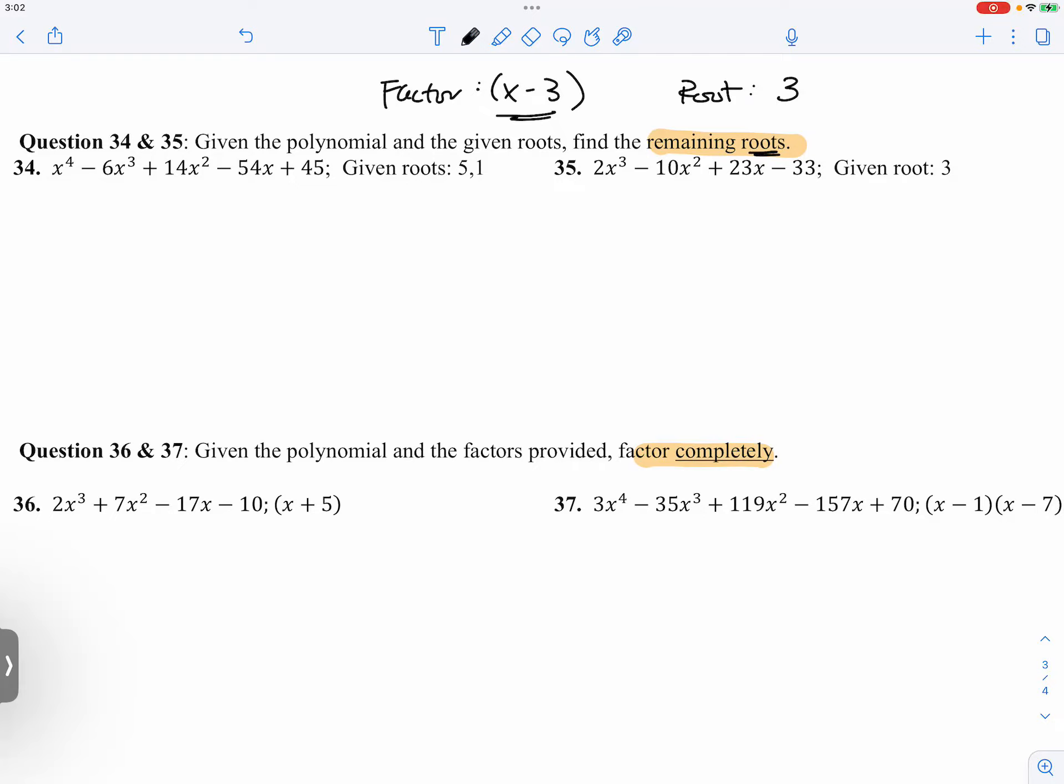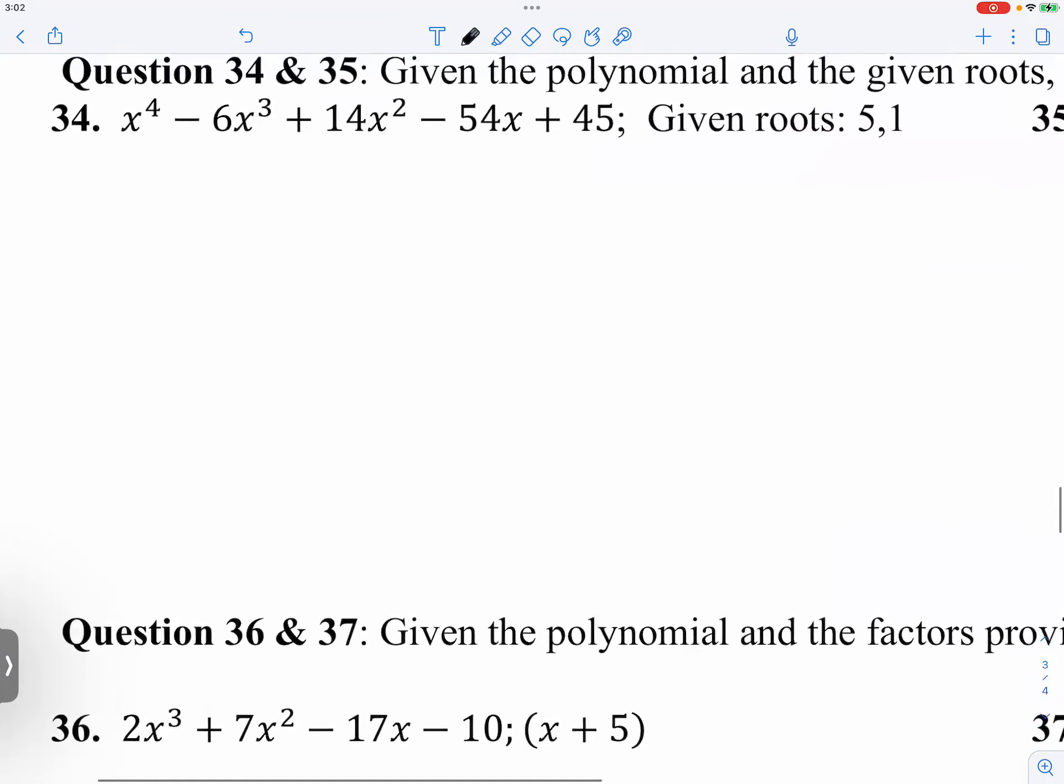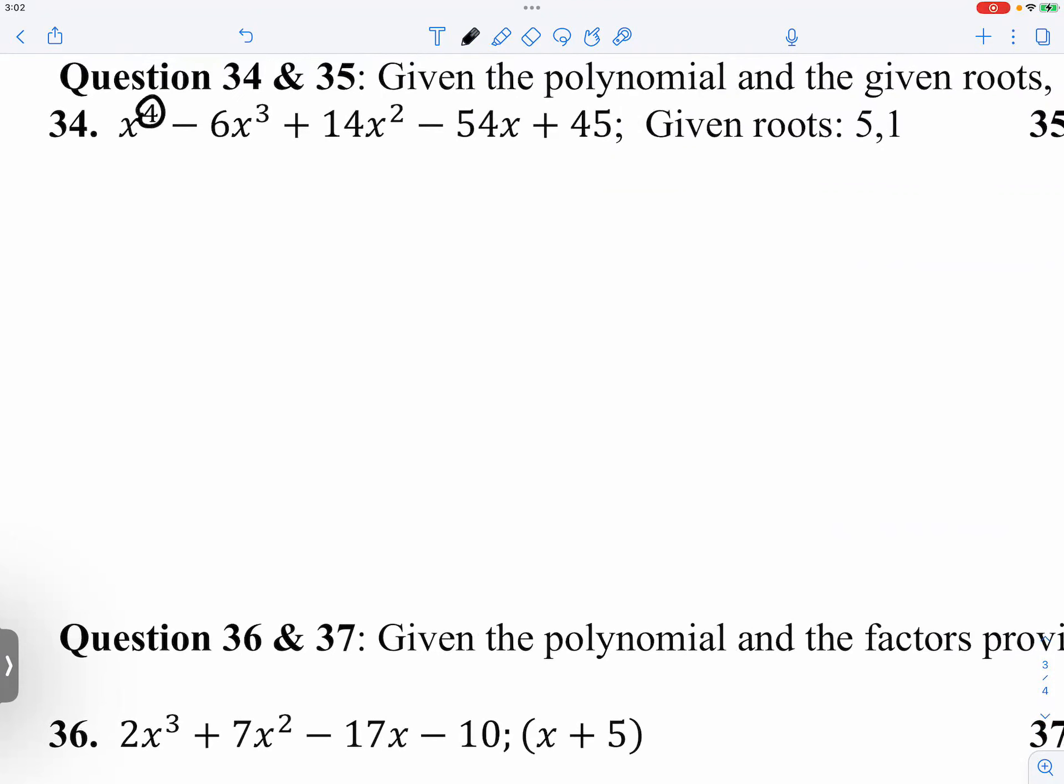So now let's go ahead and get started for number 34. You have a quartic, you have something to the fourth power, quartic expression right here. And you have two given roots, wonderful. And let's see if there's any missing term. Four, three, two, one, constant. So everything's here, so there's no missing term. And we will just go ahead and set up our synthetic division right here.